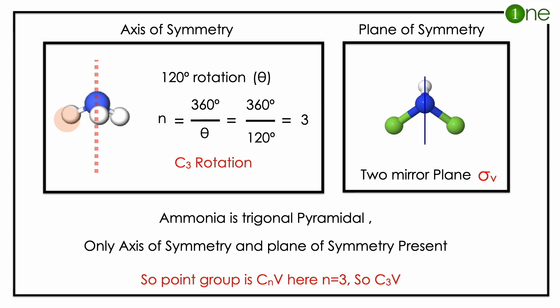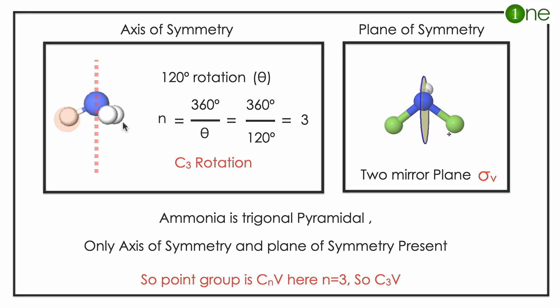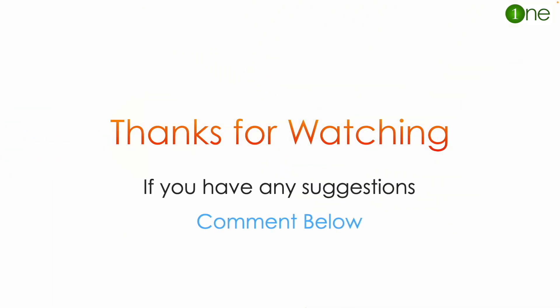Mean point group is Cnv, here n is 3, so the point group is C3v. So the point group of ammonia is C3v. That's all from this video, thanks for watching.